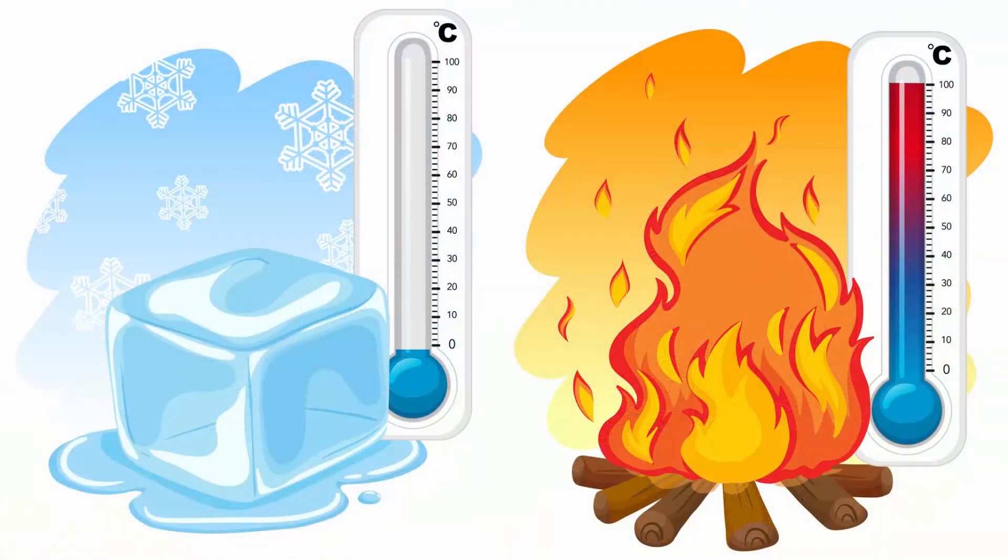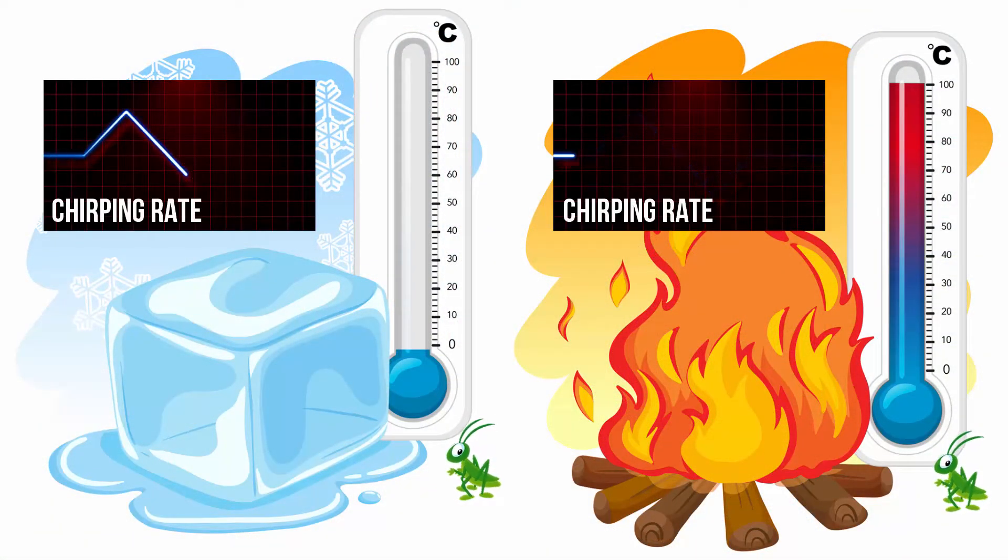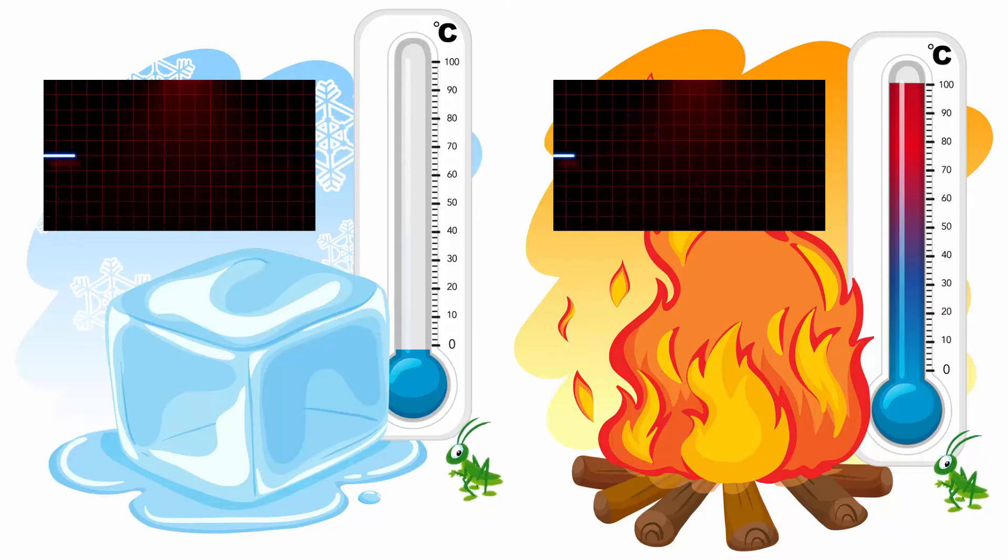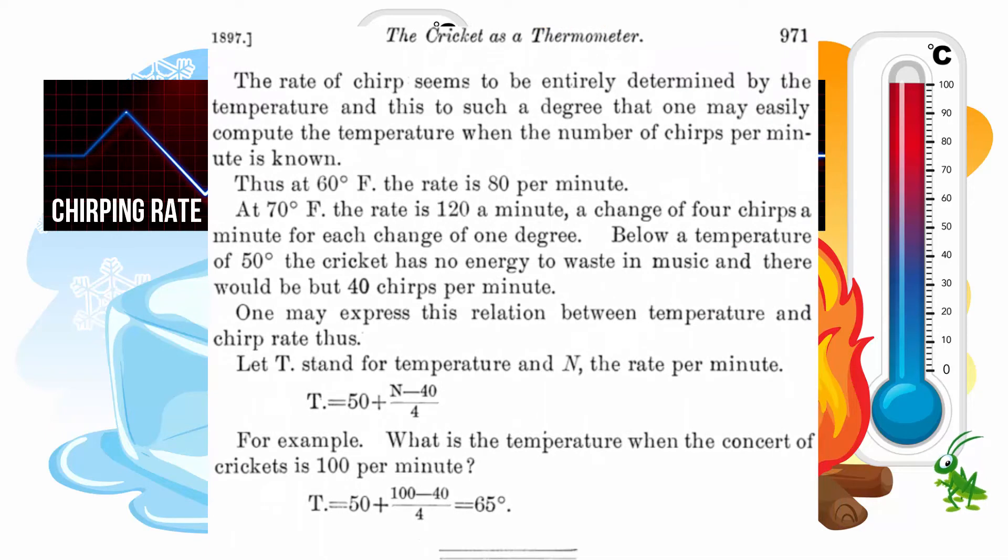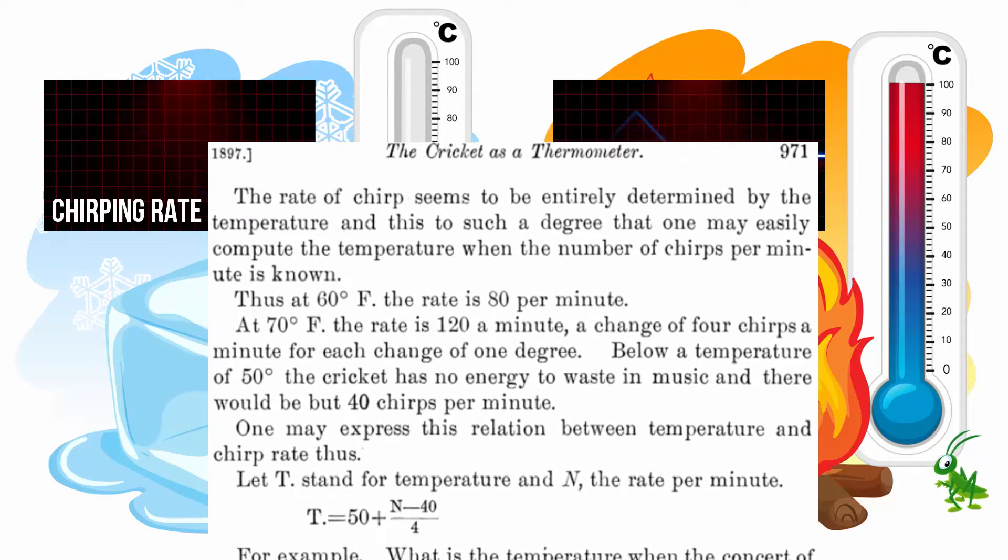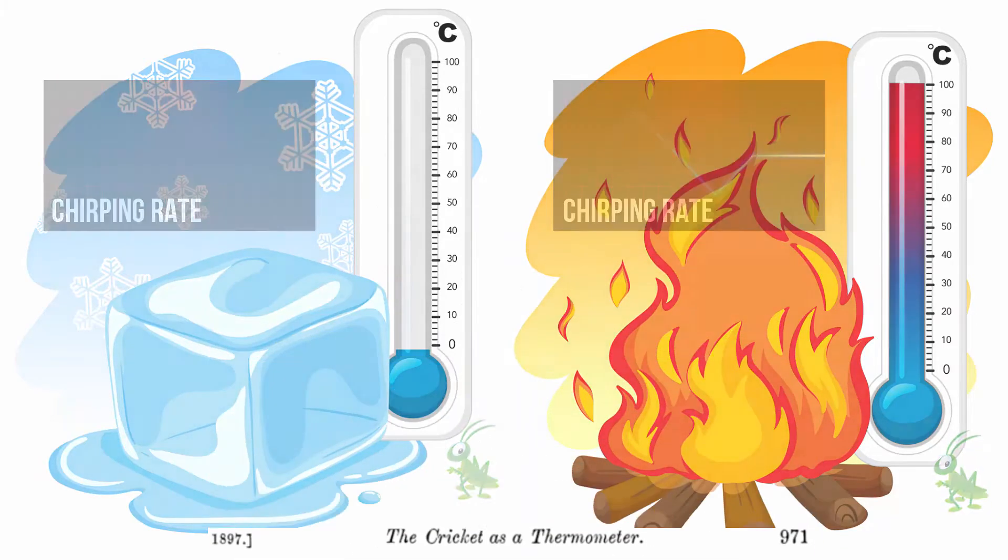But what they really are telling you while they are singing is temperature. Crickets are live thermometers. You can easily calculate the temperature knowing their chirp rate. This was written in 1897 in an article written by Amos Dolbear, and it is nowadays known as Dolbear's Law.